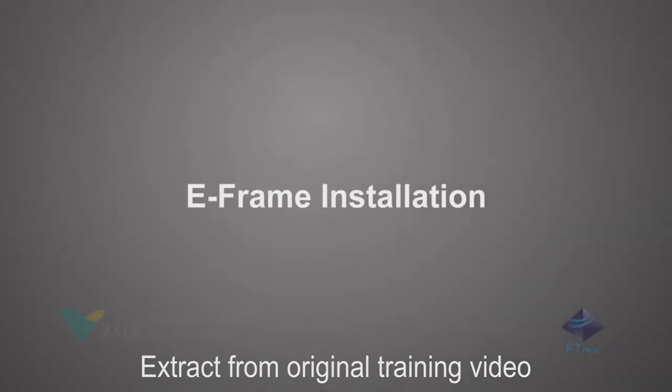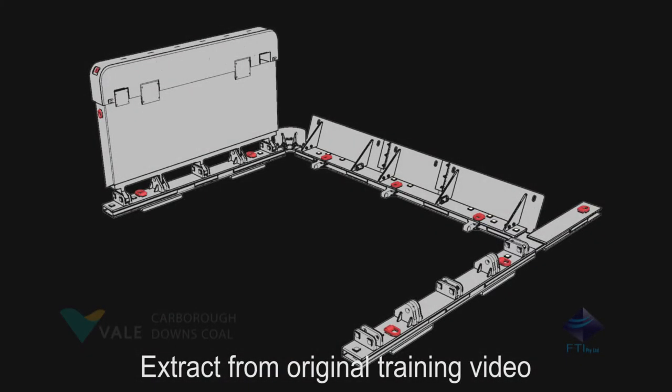E-frame installation. The E-frame structure is used in conjunction with three shields to support the roof during the long wool shield salvage process.